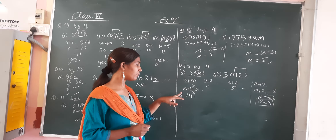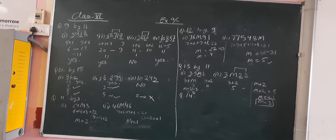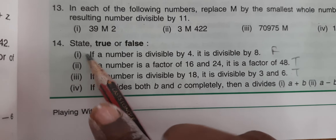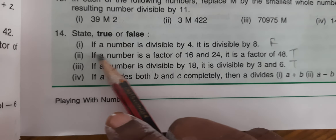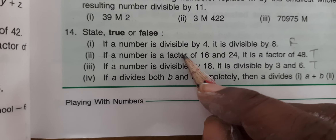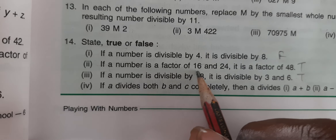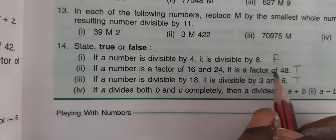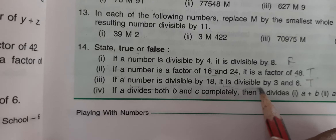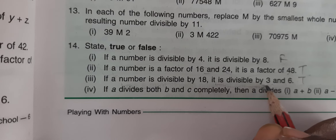Question number 14 is true or false. First one: if a number is divisible by 4, then it is divisible by 8 — this statement is false. We cannot say that if a number is divisible by 4 it will be divisible by 8.